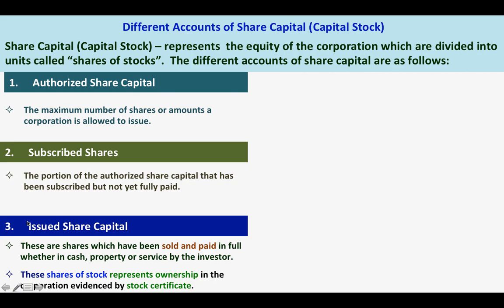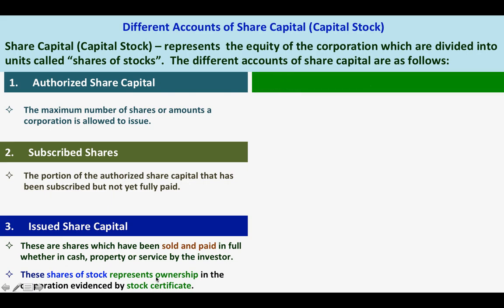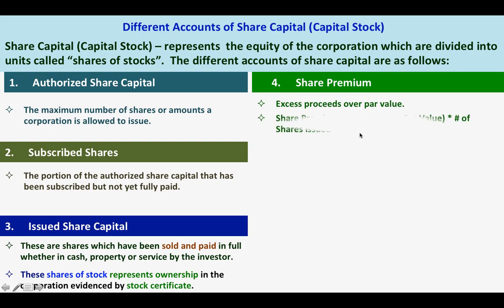If the stock has already been paid in full, then the corporation has to issue the stock certificate to the investor to evidence the ownership. Next is share premium. Share premium is the excess price over par value, and it is computed as the issue price minus par value. The share premium per unit times the number of shares issued gives you the total share premium.